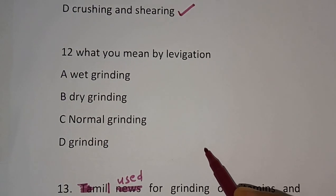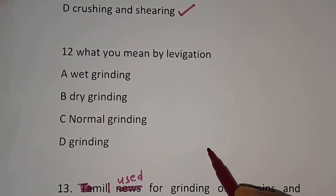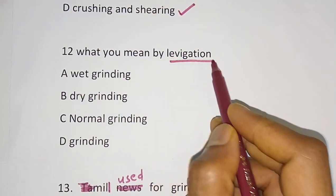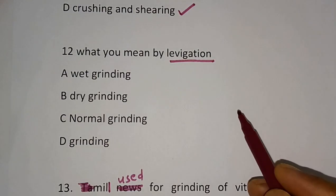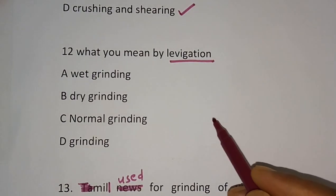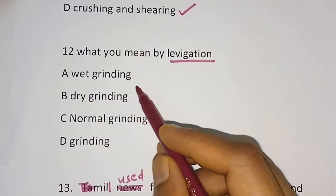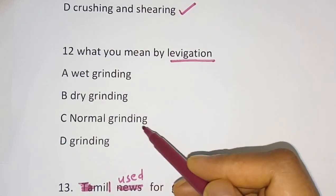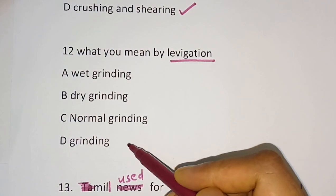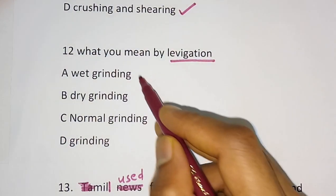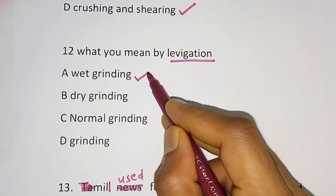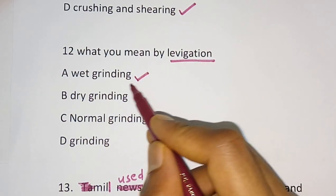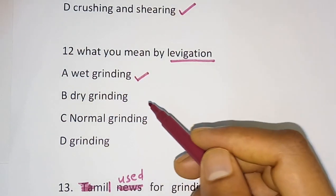Question number 12: What do you mean by levigation? Options are: wet grinding, dry grinding, normal grinding, grinding. The correct answer is wet grinding. Levigation is also known as wet grinding.